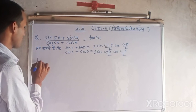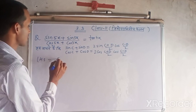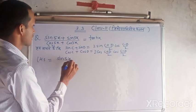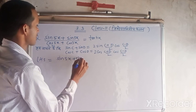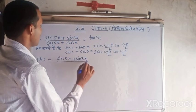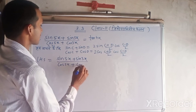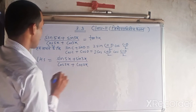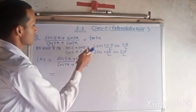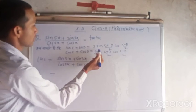On our left hand side, we have written sin 5x + sin 3x upon cos 5x + cos 3x. So we can write this using the formula. We can write this as 2 sin...